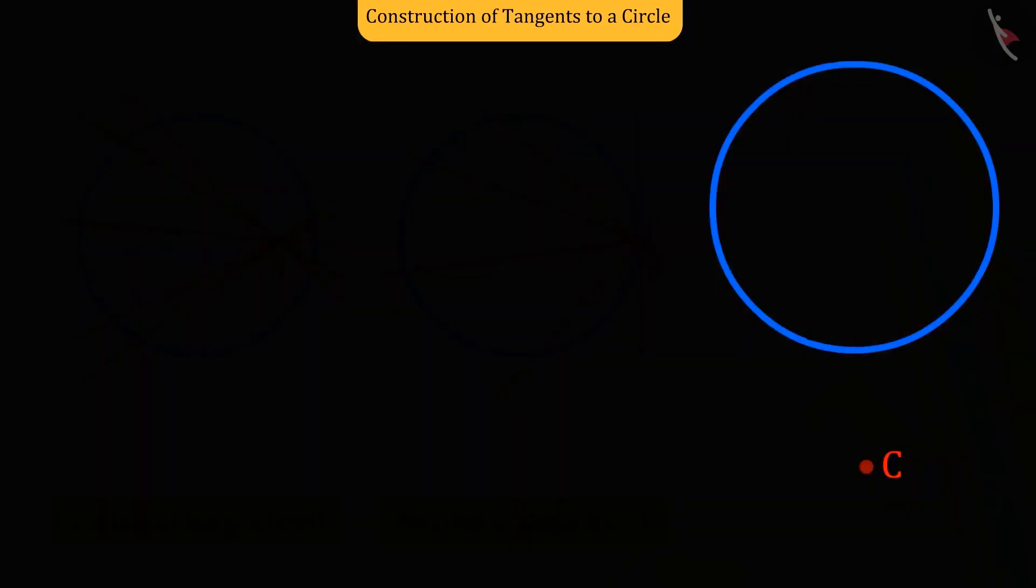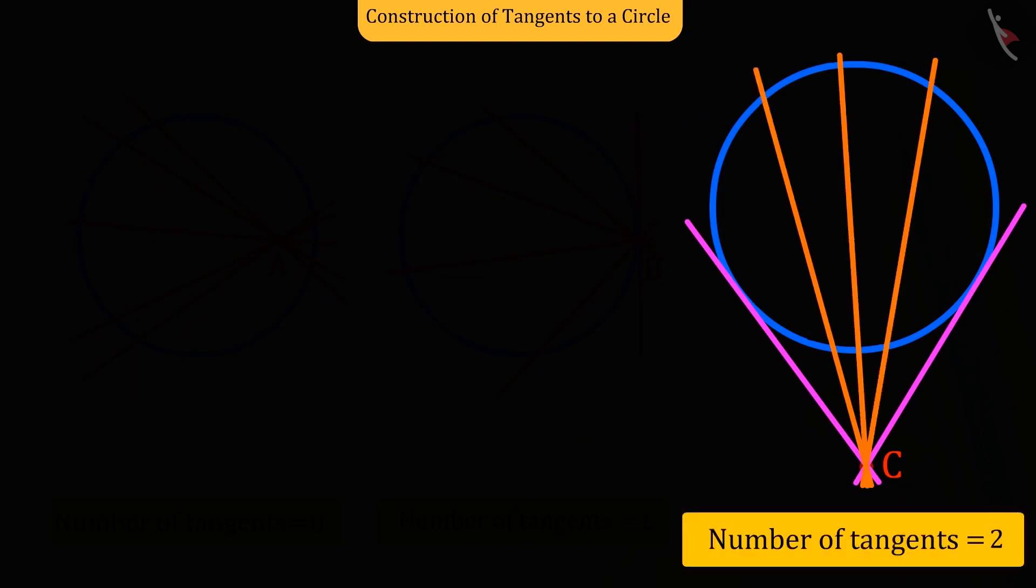And only two tangent lines can be drawn from the point outside the circle.